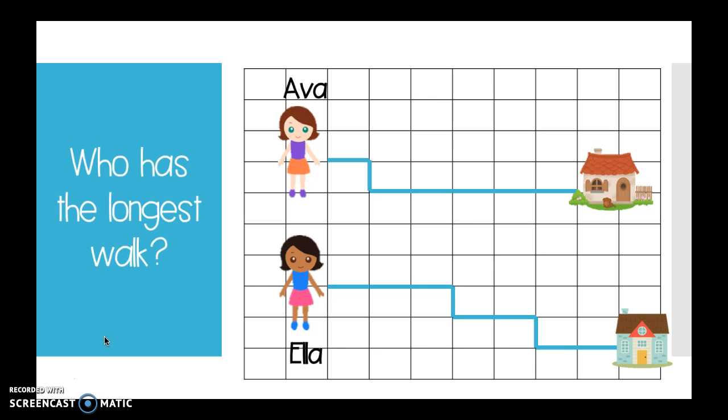I'm going to go ahead and start with Ava. I'm going to count all the pieces or the different parts of the squares that she has to walk to get to her house. Here we go. One, two, three, four, five, six, seven. Wow, it takes Ava seven steps to get to her house.